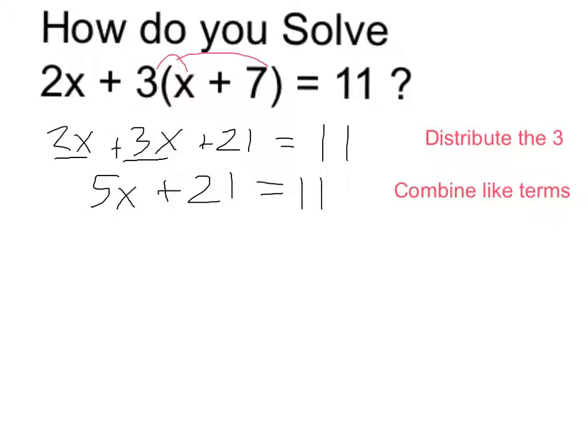Now I have a two-step equation. To get the x by itself, I want to undo what's done to the x. I'm going to undo the addition of 21 by subtracting 21. If I do it on one side, I need to do it on both. Which leaves me with 5 times x equals negative 10.